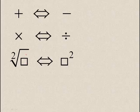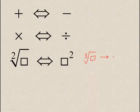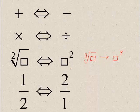Likewise, with any other root — for example, the cube root of something — the cube root, when it moves over, simply becomes cubed. So a cube root will move over and become cubed. The last one: a fraction. If I have a fraction on the left-hand side and I am moving it over to the right-hand side, the fraction inverts itself. So a half hops over to the other side and becomes a 2.